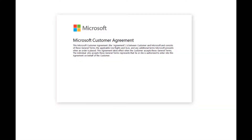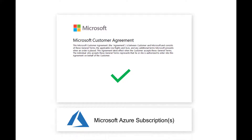Congratulations on signing your new Microsoft Customer Agreement. Today, we will review the steps you'll take to move the billing for your existing Azure subscriptions purchased from Azure.com through the Microsoft Online Subscription Agreement, MOSA, to your new Microsoft Customer Agreement. This transition only moves the billing for your Azure subscriptions. The Azure resources tied to your subscriptions do not move, so the transition will not interrupt your Azure services.